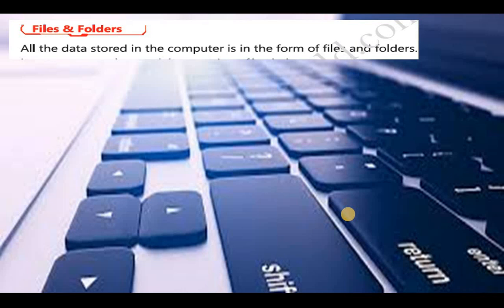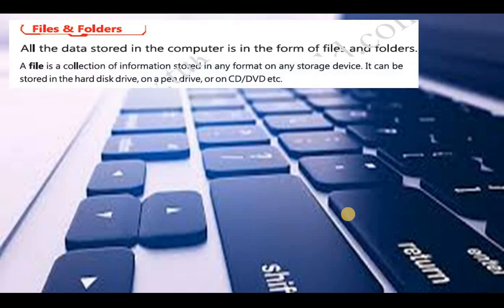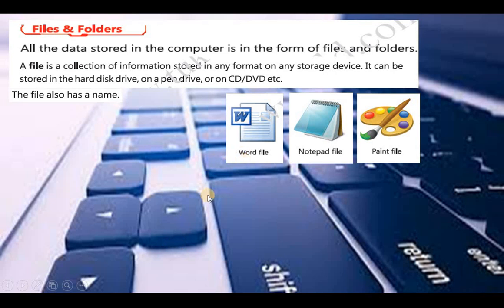Let's move on to the next topic: files and folders. All the data that we have on the computer is available in the form of files and folders. A file is a collection of information stored in any format on any storage device — it can be stored on the hard disk drive, a pen drive, or a CD/DVD. A file always carries a name; without a name there is no file. These are files of different programs — this is the Word file, this is the Notepad file, and this is the Paint file. These small pictures are known as icons — that is what GUI does.